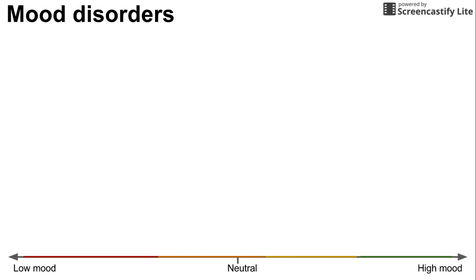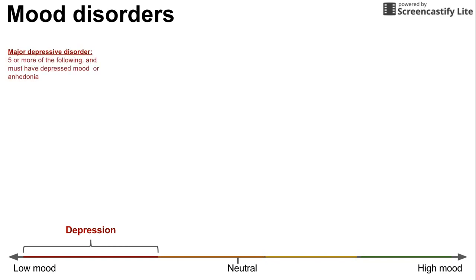Let's begin with the low mood side of the axis. Depression largely makes up this left side, and we're going to talk about the criteria for major depressive disorder. Major depressive disorder requires five or more of the following symptoms, and one of those symptoms must be either depressed mood or anhedonia. The symptoms are: depressed mood, sleep changes, interest loss — also called anhedonia.